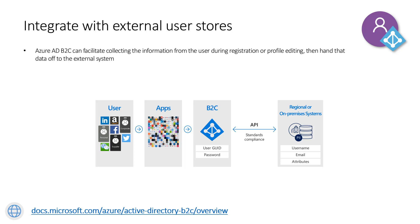When talking about B2C, authorization is not supported — probably yet. So we have to provide some external store and external mechanism to provide authorization in our applications. This is possible because we can integrate Azure Active Directory B2C with external stores and external APIs. During user login or registration we can call an external service, confirm some information, get additional attributes of the user, and then return those attributes in the JWT token.